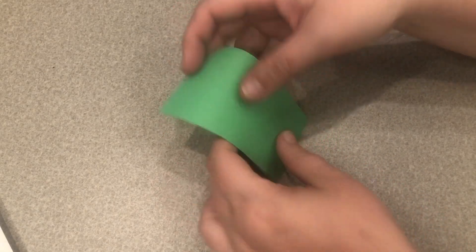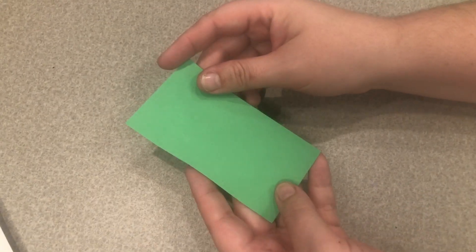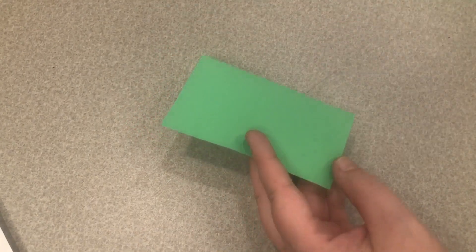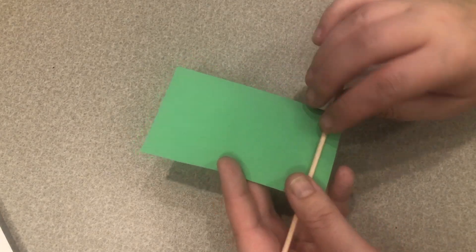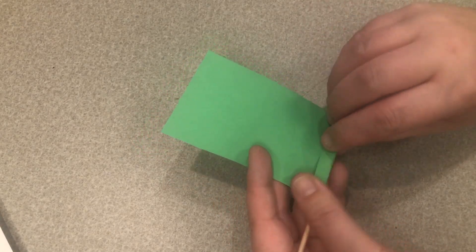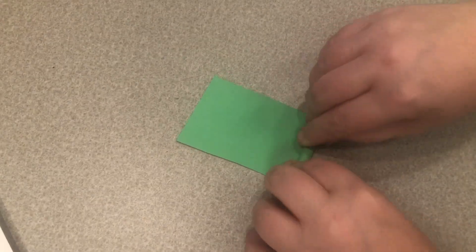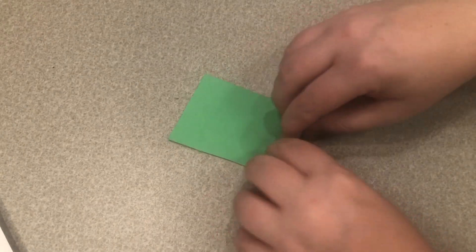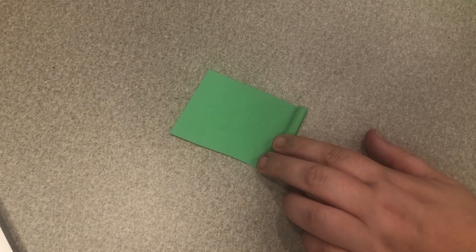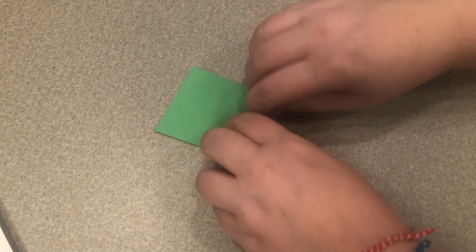To begin we're going to take our little rectangle of paper here and our dowel rod and we're just going to gently wrap our paper around the dowel rod and then you can go ahead and take it out and just roll it the rest of the way up.